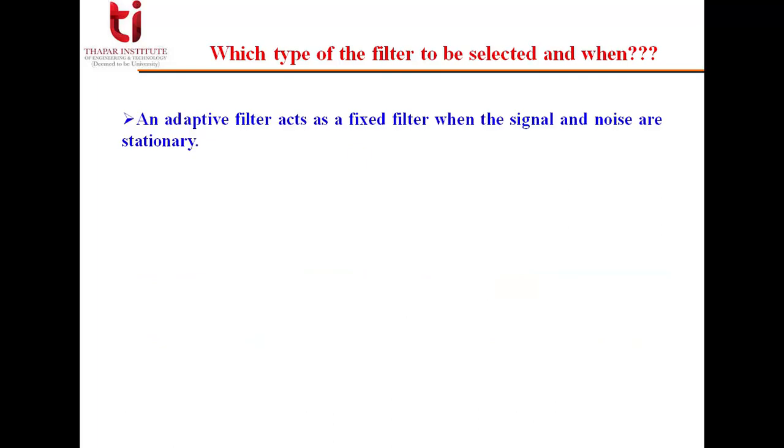An adaptive filter acts as a fixed filter when the signal and noise are stationary. An adaptive filter can also act as a notch or a comb filter when the interference is periodic.